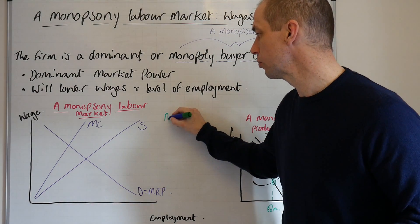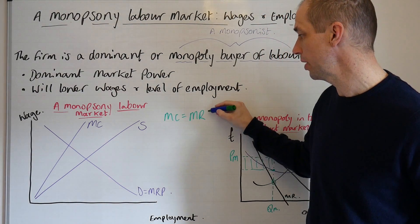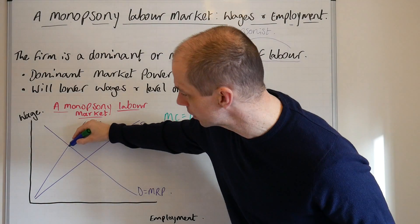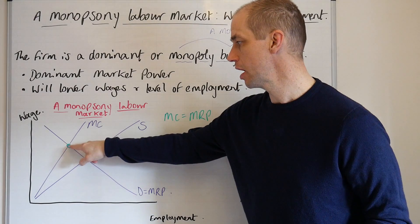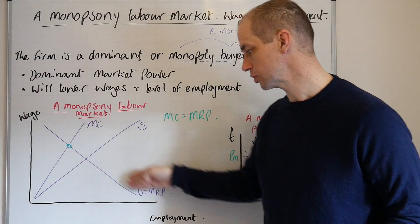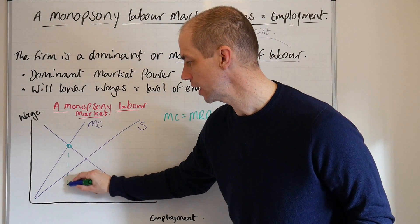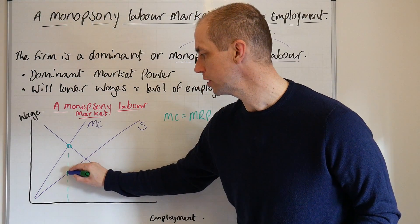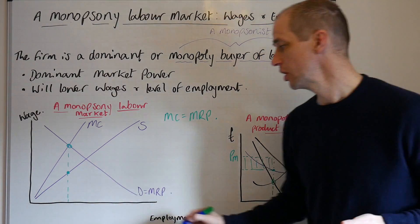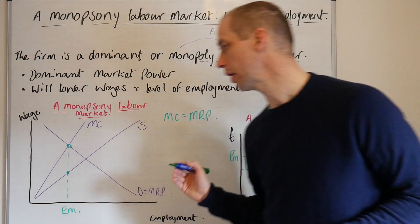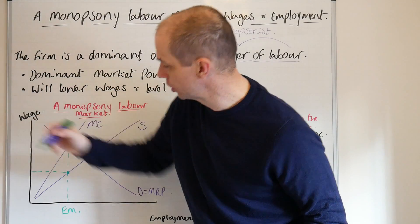Now let's look at the monopsonist and how they will use such information. The key principle again is MC equals — and in this case it's not just MR, it's MRP, marginal revenue product. So at this level of output, we've got where the actual marginal revenue product equals the marginal cost of employing those additional workers. If we take that line down, we can then see the point at which that intersects the supply curve. At that point, we can identify for our monopsony the wage rate that will actually be offered to a given employee.